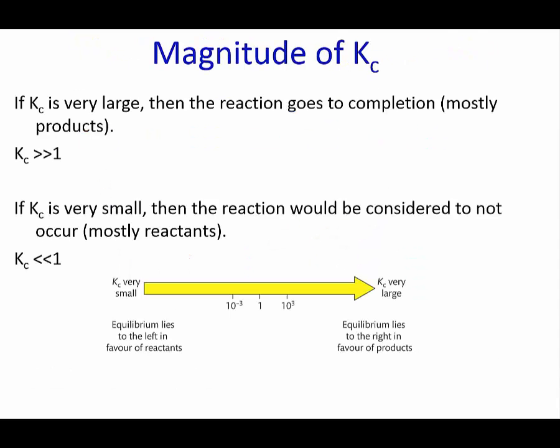The size of the equilibrium constant determines the side of the reaction that is favoured. If there is a factor of greater than 1000, we consider the reaction goes to completion to one side.